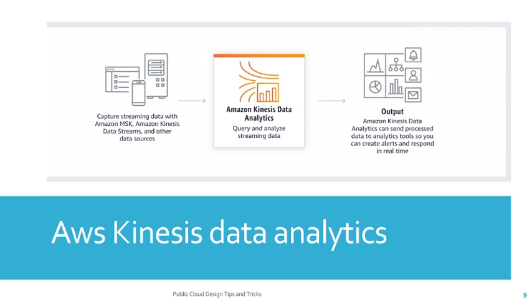AWS Kinesis Data Analytics is the easiest way to process data streams in real time with SQL or Apache Flink, without having to learn new programming languages or processing frameworks. As you can see in this diagram, it captures streaming data with Amazon MSK or Amazon Kinesis Data Streams and other data sources. Amazon Kinesis Data Analytics queries and analyzes the streaming data, and the output can be sent to analytics tools so you can create alerts and respond in real time.